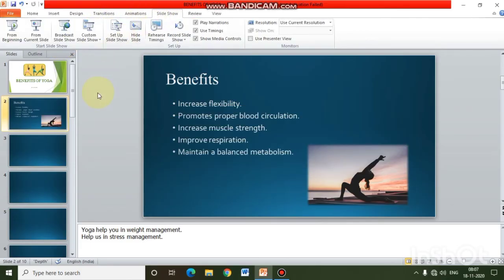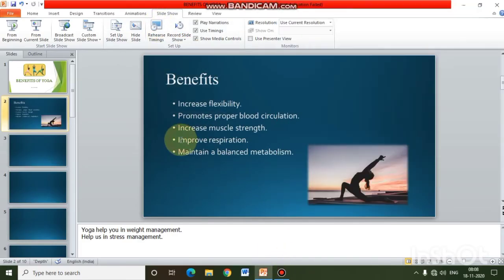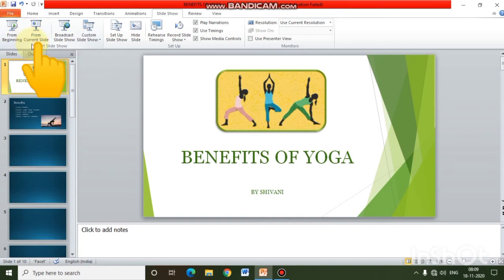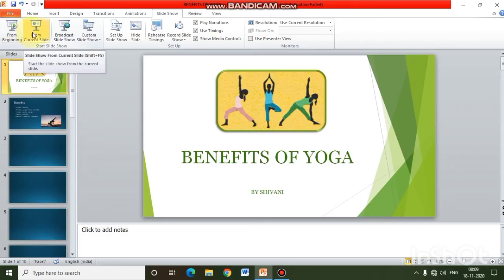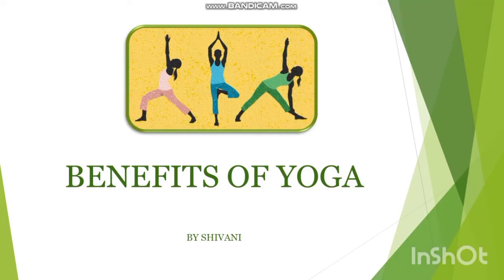Next is Slide Show View, which helps us present our final presentation to the audience. PowerPoint has a separate Slide Show tab for this. Under the Slide Show tab there are two options: From Beginning and From Current Slide. From Beginning starts the slide show from the first slide, while From Current Slide lets you start from whichever slide you select. Use the mouse or arrow keys to advance slides.